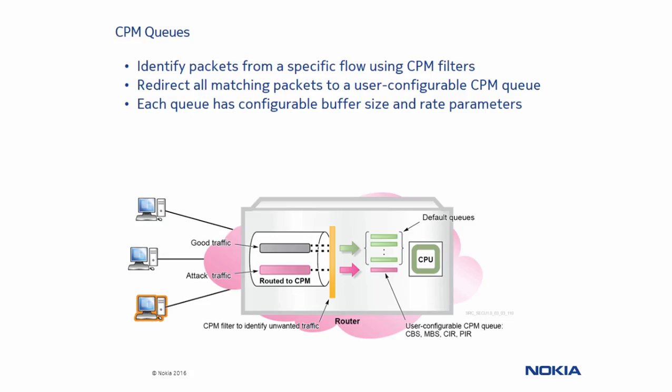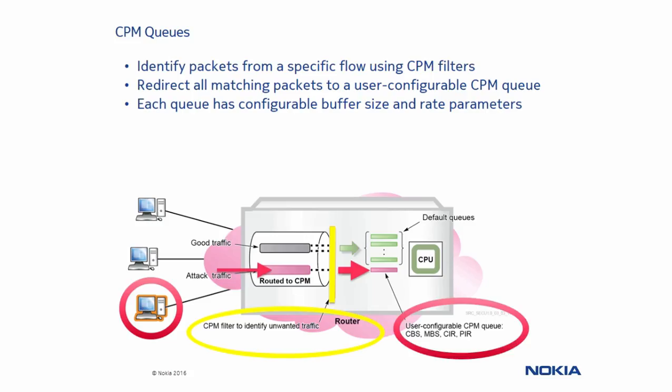In this example, attack traffic is being sent to the Nokia 7750 service router from a user. The input-output module accepts the traffic and sees that it is control plane traffic destined to this router. It then routes the control plane traffic to the CPM module. The CPM filter that is enabled checks all traffic being routed to the CPM, and the action is to take the unwanted traffic and send it to a configurable queue. The configured queue has PIR, CIR, MBS, and CBS values that will rate limit the traffic to the CPU, protecting it from being over-utilized. Any traffic that does not conform to these rates and buffer settings will be dropped.